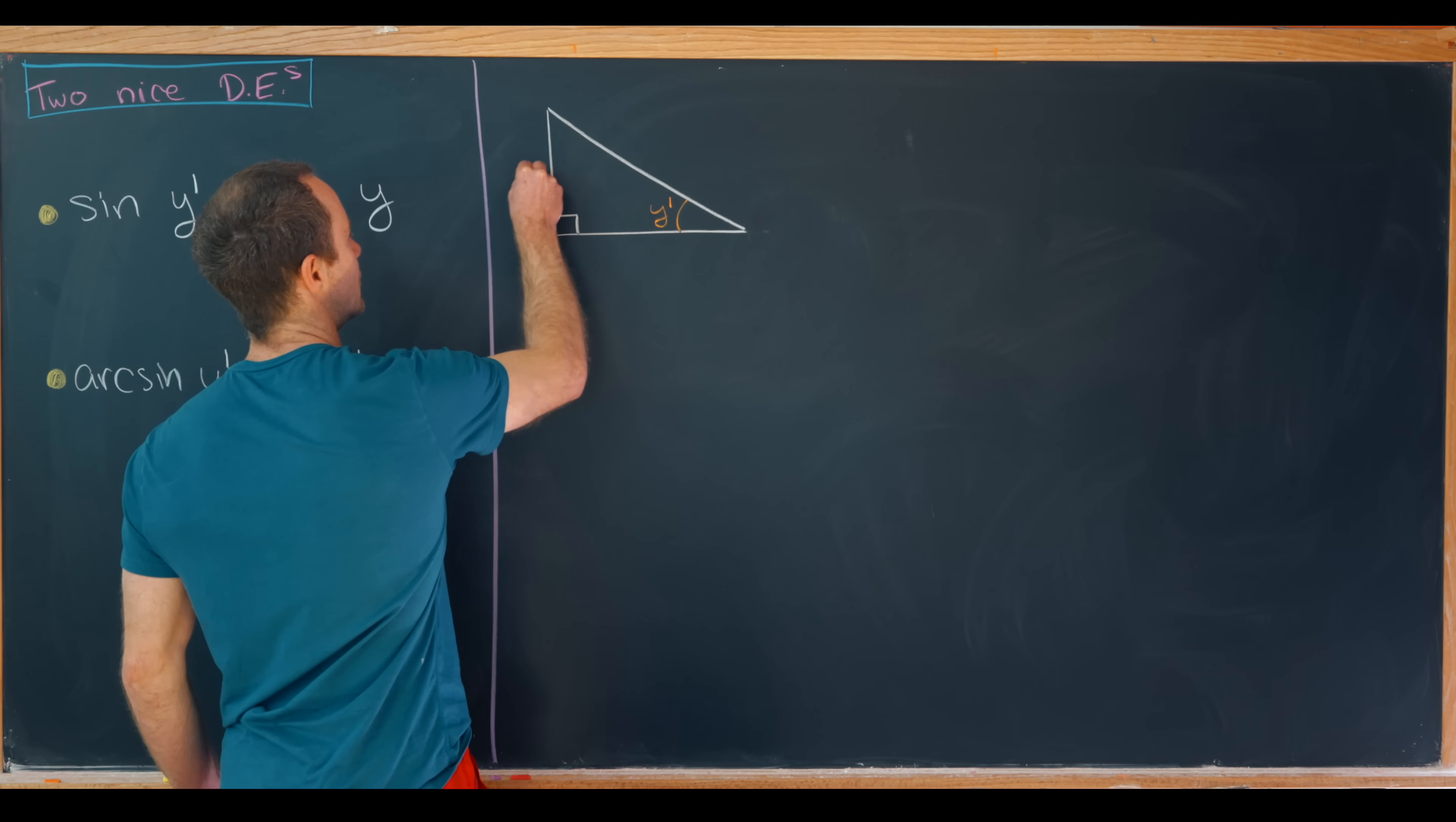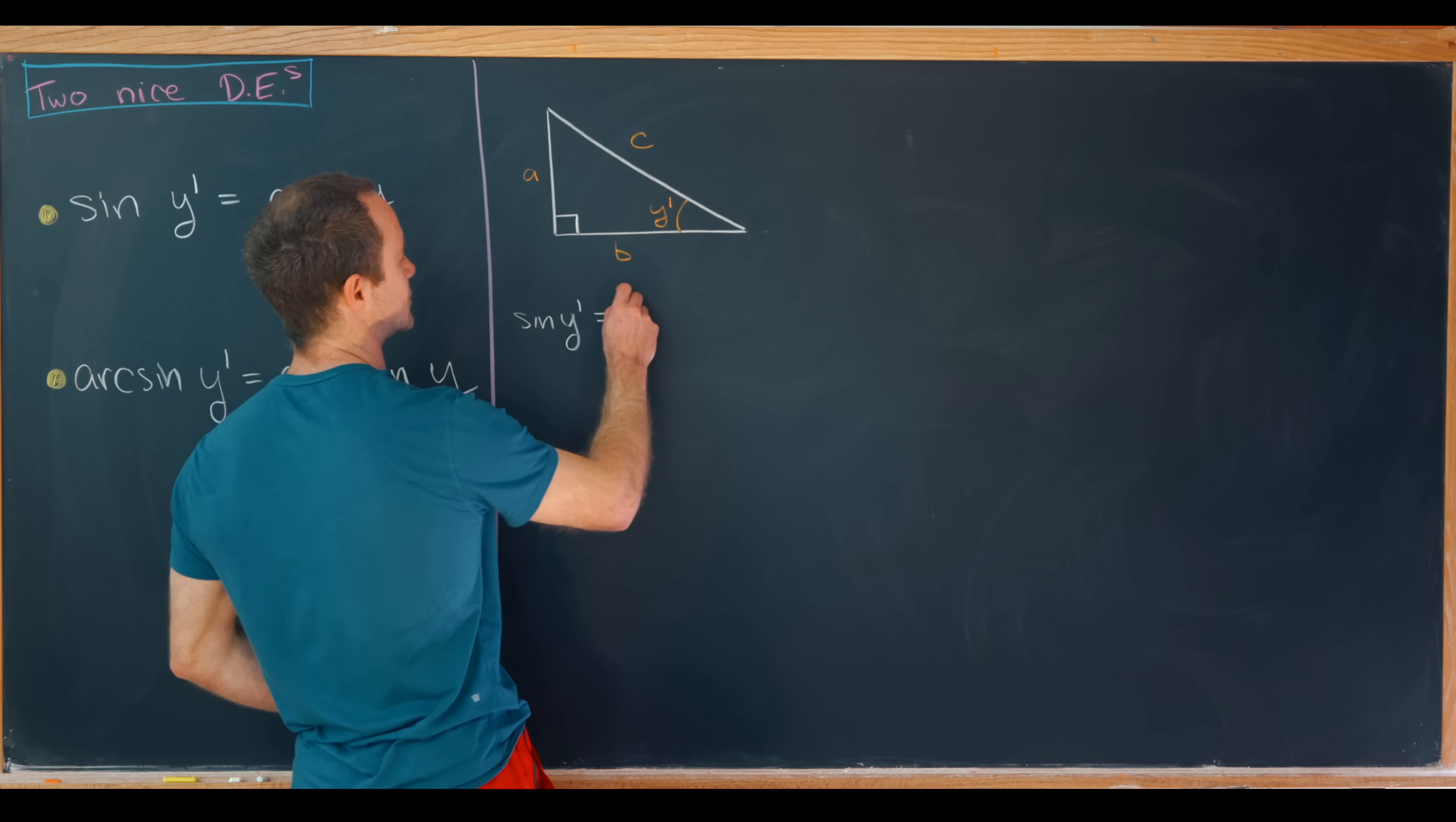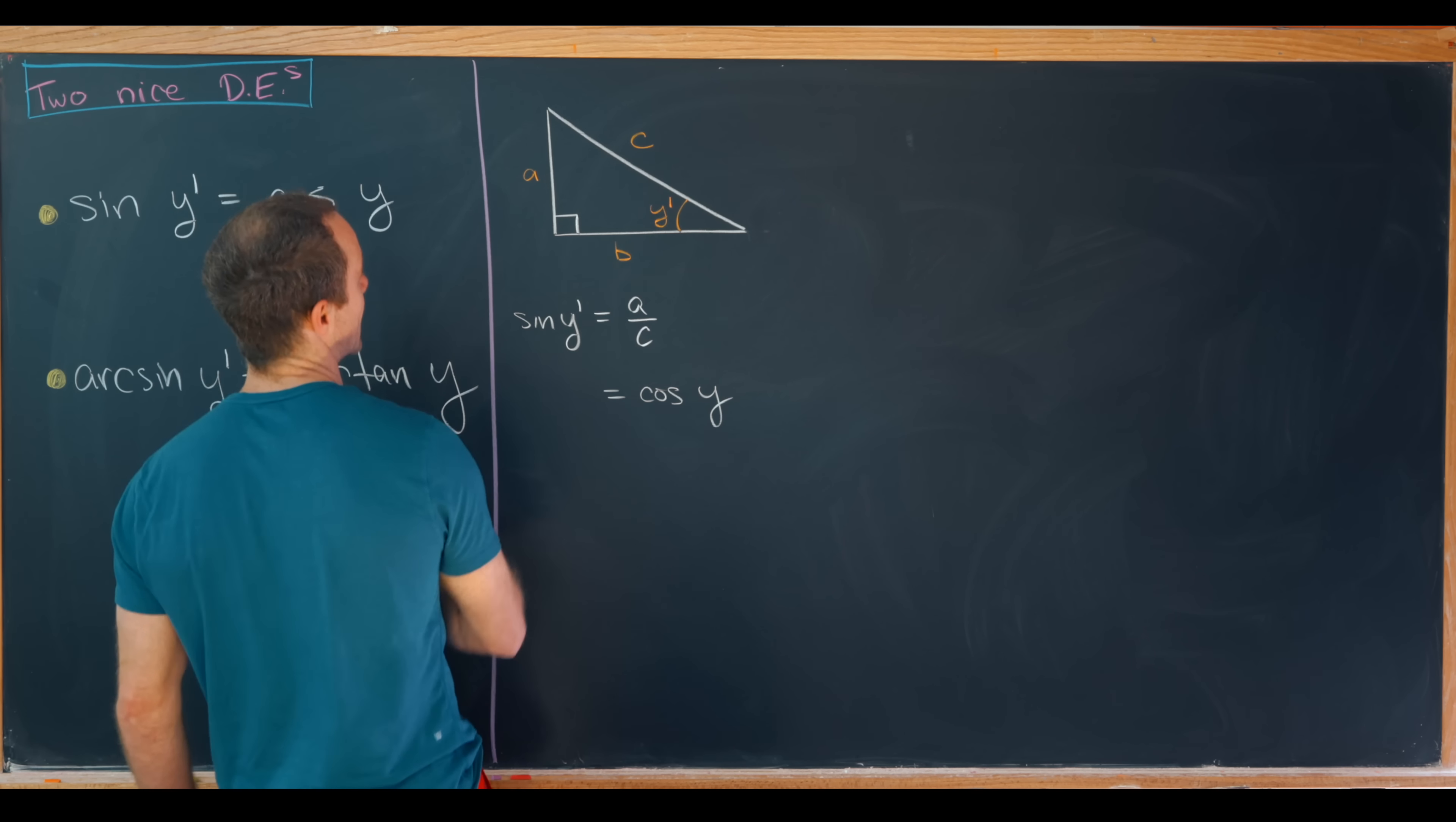Now the sine of y prime will be opposite over hypotenuse. So let's give these some names. Maybe we'll give this a, b, and c. Notice sine of y prime will be equal to a over c.